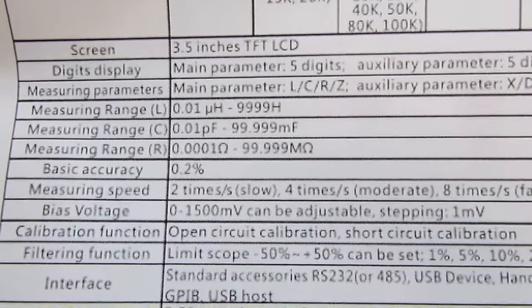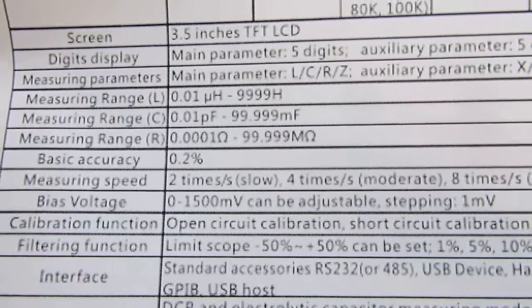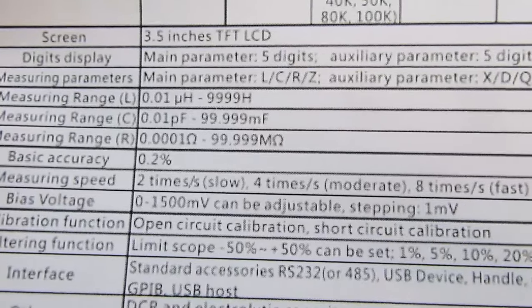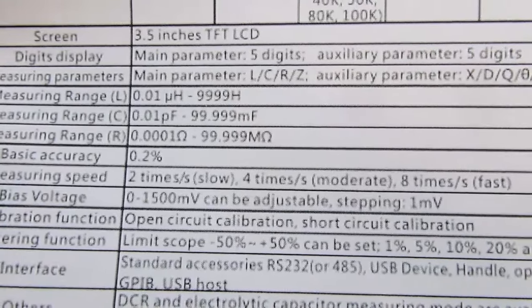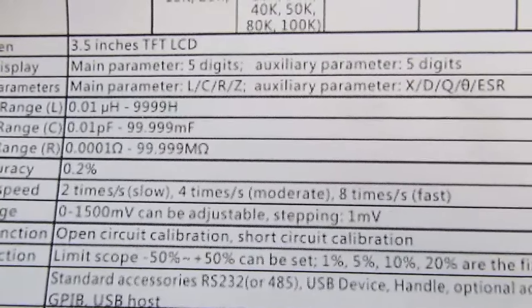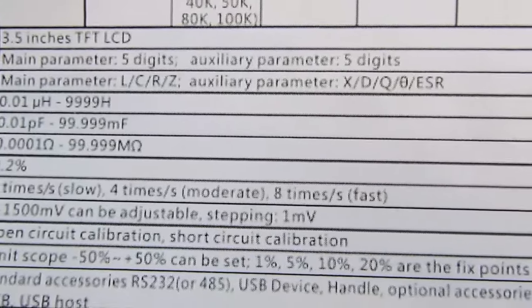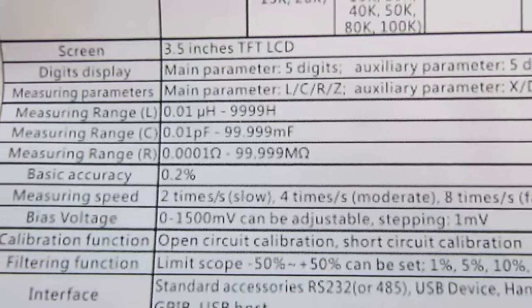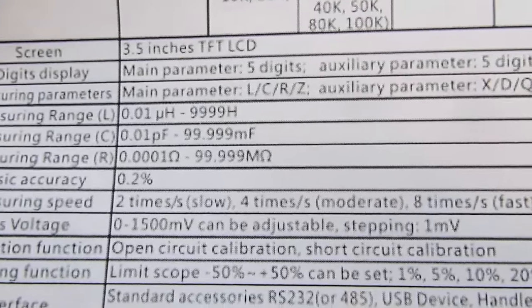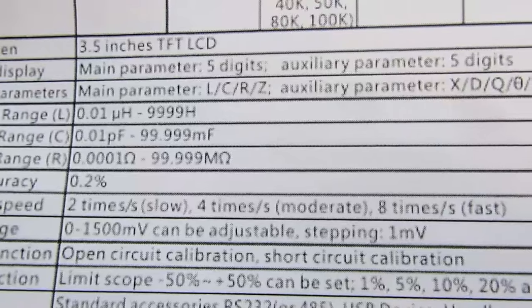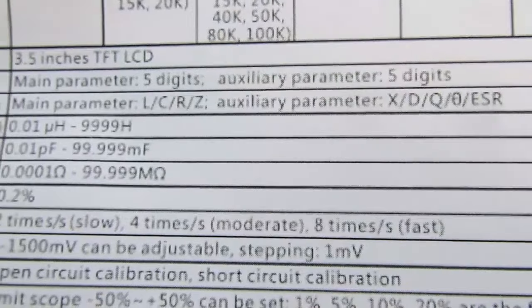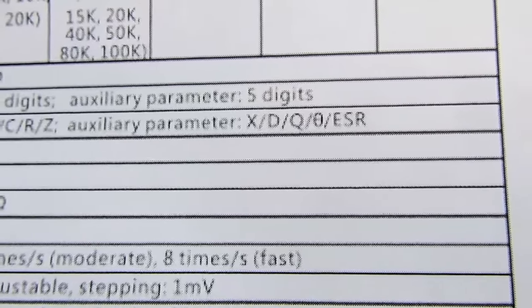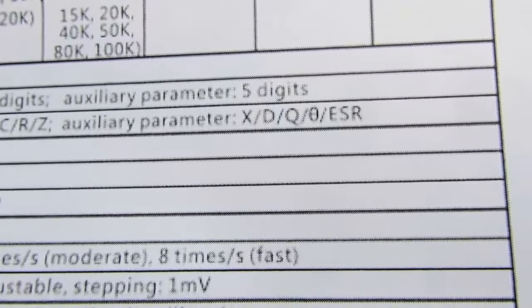The rest of the specs here: it's a 3.5 inch diagonal TFT LCD. The main parameter is displayed up to 5 digits. The auxiliary or secondary parameter is also 5 digits. Measuring parameters: L, C, R, and Z as the primary, and then the auxiliary or secondary is X, D, Q, Theta, and ESR.